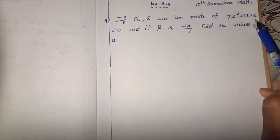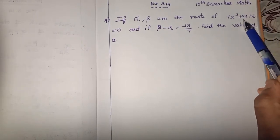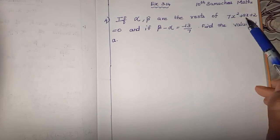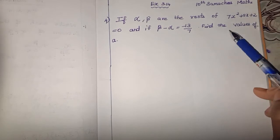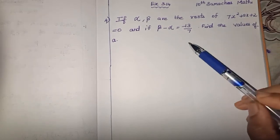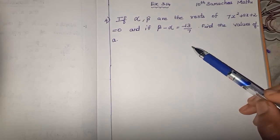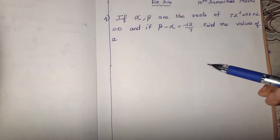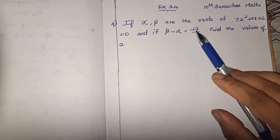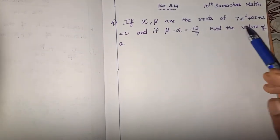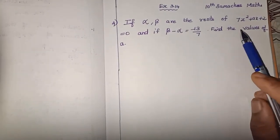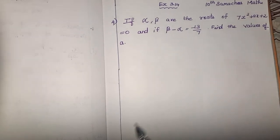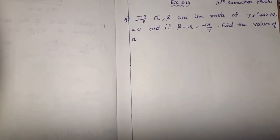Our equation has an unknown value. The coefficient of x is A. So, how do we approach this? The hint given is that alpha and beta are the roots. What is the relation between the roots and the coefficients of the equation?